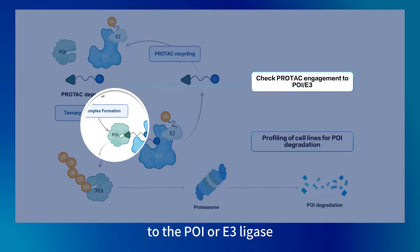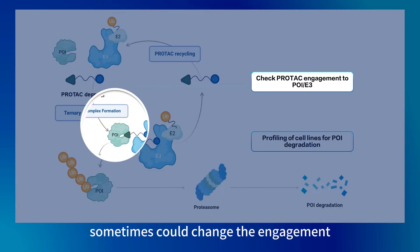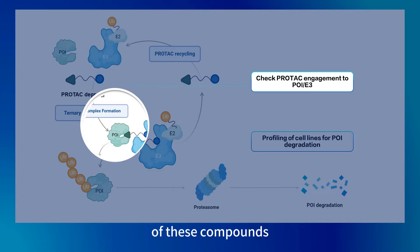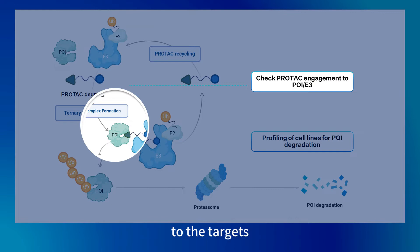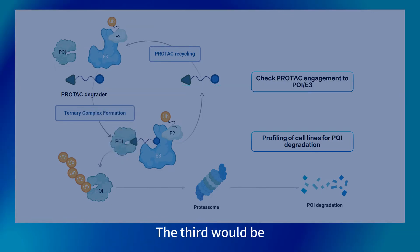The second would be to check the PROTAC engagement to the POI or E3 ligase. The screening conditions can sometimes change the engagement of these bifunctional molecules to their targets.